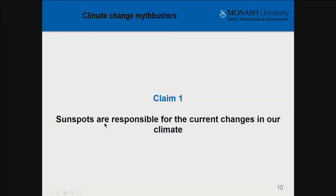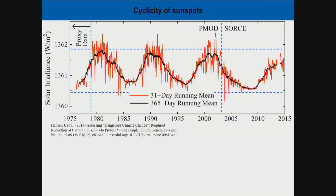So understandably, the claim is that sunspots are responsible for the current changes in our climate. We're going to fact-check that using empirical data — directly measured information. This graph from a paper available online shows, on the x-axis, the year from 1975 to 2015, and on the y-axis solar irradiance in watts per metre squared. The axis only covers 1360 to 1362 W/m² — a range of just two watts per metre squared.